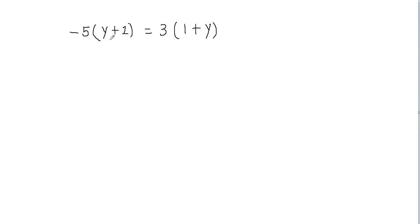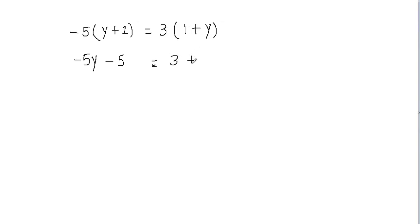First of all, let's get rid of the parentheses. To remove the parentheses I will have to distribute negative 5 across y plus 1, and then I'll have to distribute 3 across 1 plus y. That means I need to multiply every single term inside the parentheses with negative 5. So negative 5 times y gives me negative 5y, and negative 5 times positive 1 gives me negative 5. Then 3 times 1 gives me 3, and 3 times positive y gives me 3y.